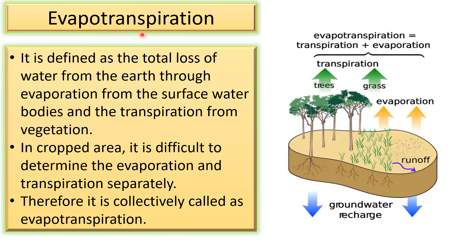The first component is evapotranspiration. In the previous class we learned what is evaporation and what is transpiration. Evaporation is the conversion of liquid water into gaseous form. Transpiration is the process by which roots of plants and trees absorb water and give out water vapor through the pores of the leaves. Evapotranspiration is defined as the total loss of water from the earth through evaporation from the surface water bodies and transpiration from the vegetation. In cropped areas it is difficult to determine the amount of evaporation and transpiration separately, so collectively it is called evapotranspiration.